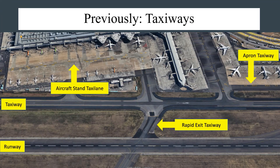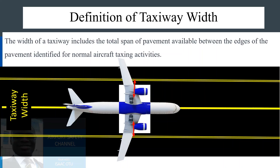Previously, we looked at taxiways in general and learned about the various names associated with the various types of taxiways in the aerodrome. If you have not watched that video, click on the link above to watch it. The width of a taxiway includes the total span of pavement available between the edges of the pavement identified for normal aircraft taxiing activities.